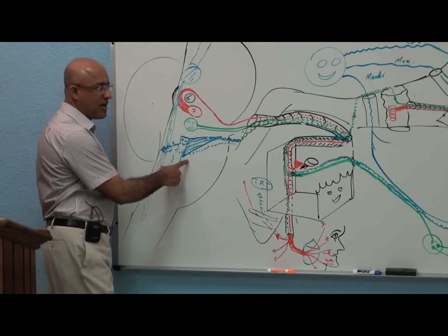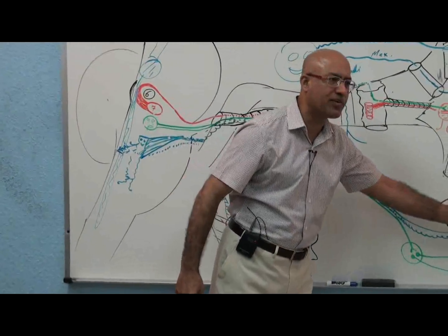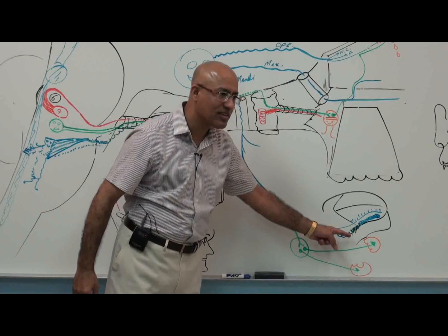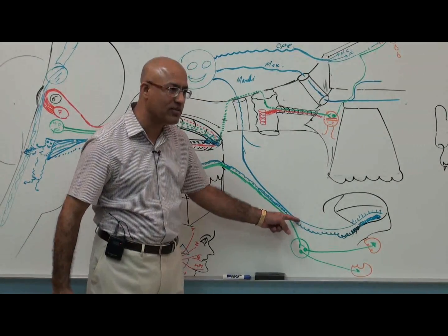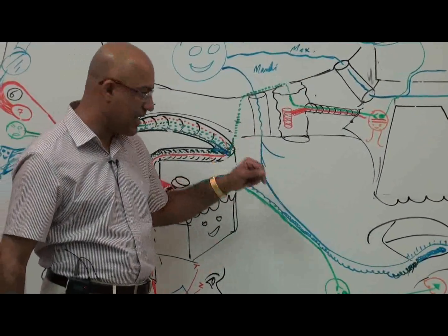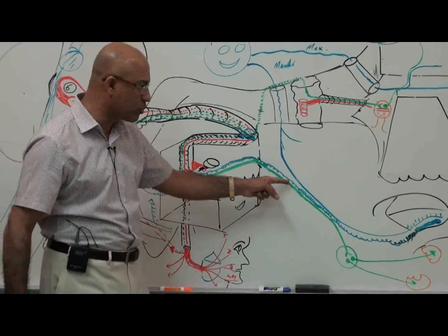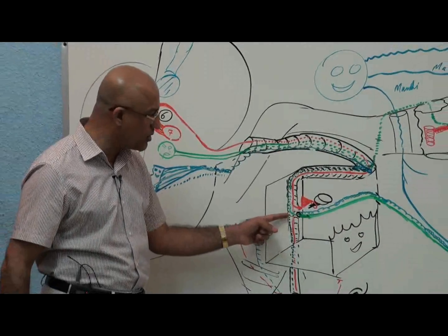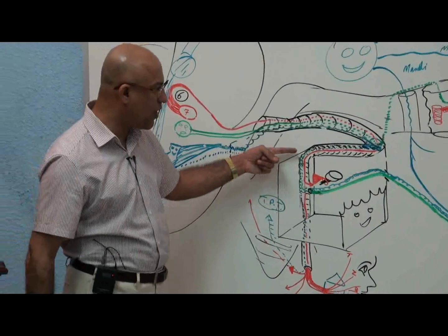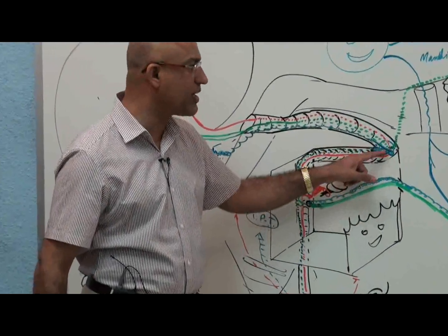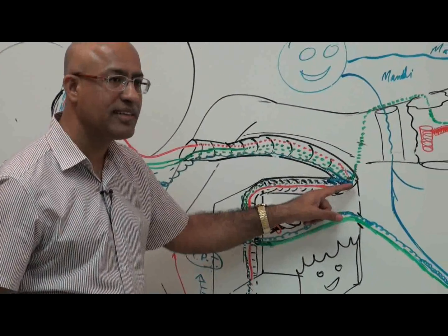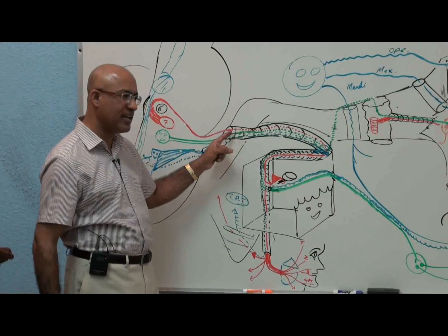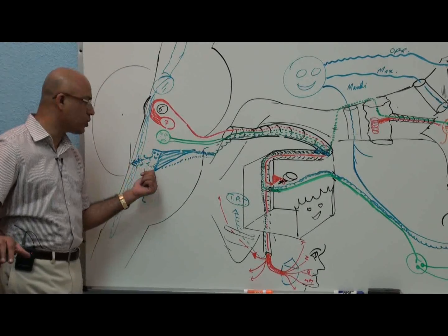Taste fibers from the anterior two-thirds of the tongue move centrally as part of the lingual nerve. From the lingual nerve, touch, pain, and temperature fibers go to the mandibular division of the trigeminal, while taste fibers become part of the chorda tympani. Through the chorda tympani they pass through the middle ear cavity and reach the facial nerve in the facial canal, moving upward and forward. At the geniculate ganglion they have their cell bodies, and the central processes move with the nervous intermedius through the internal acoustic meatus to the brainstem.